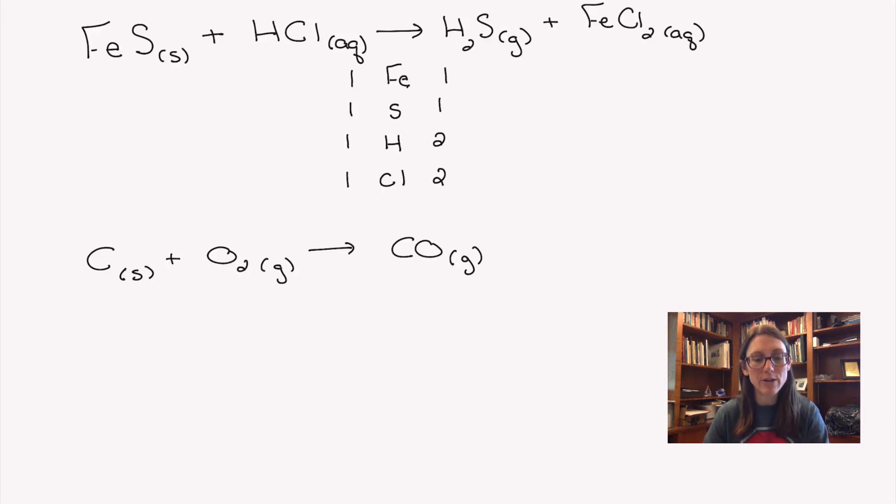Now you're going to look and figure out what doesn't match. It looks like the H and the Cl don't match, so I will fix that by adding more. You're always going to add more. I'm going to put a coefficient of two in front of HCl because I need to get two hydrogens. If I double the amount of HCl, I'll get two hydrogens and two chlorines, and the equation is balanced.